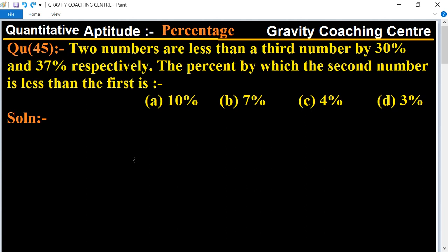This question: two numbers less than third number by 30 percent and 37 percent less. So we need to find how much the second number is less than the first number.